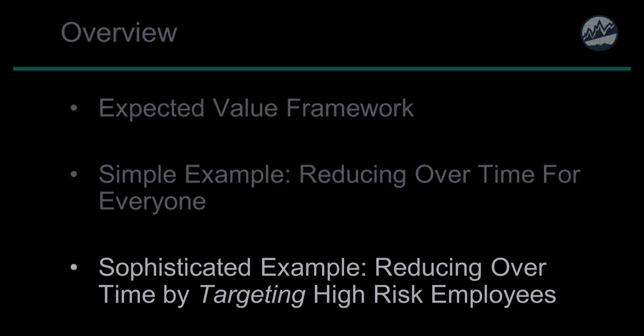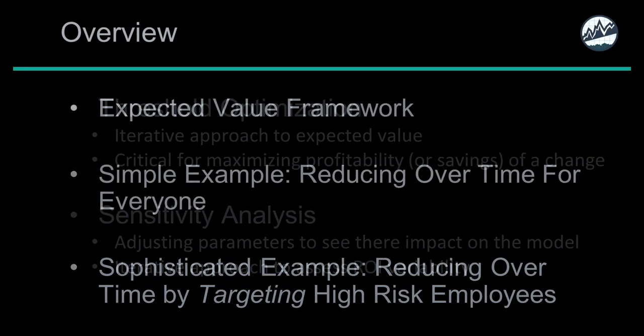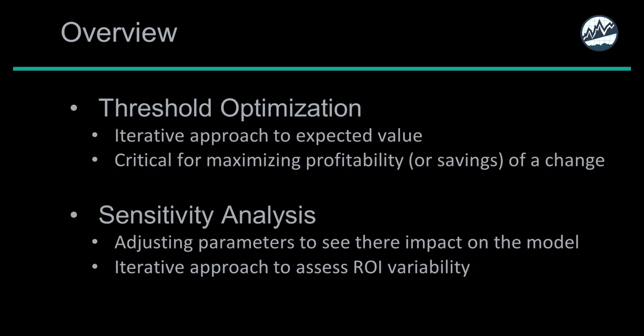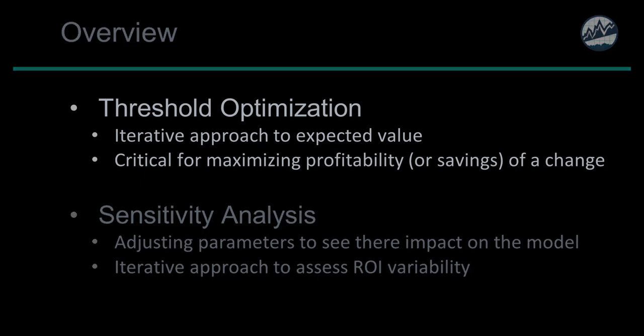We'll then dive into a more sophisticated example showing how the expected value framework can be used for a classifier by adjusting the threshold, targeting high risk employees for overtime reduction rather than reducing overtime for everyone. Threshold optimization involves iteratively calculating an expected value by adjusting the threshold metrics of the classification model. This optimization process is critical for maximizing profitability or savings of a policy change.